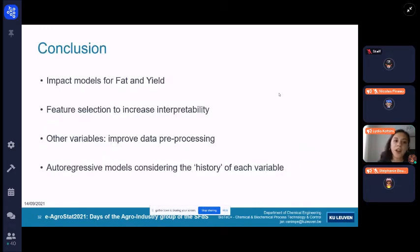To conclude, we were able to build impact models for fat and yield. However, when it comes to interpretability of which climatic factor plays an important role, we should perform a feature selection. For the other variables, mostly microbial load or somatic cell counts, we need to improve our data preprocessing. And what we are aiming to do now and we are currently working on it is building autoregressive models that are considering the history of its variable and are able to forecast in the future as well.